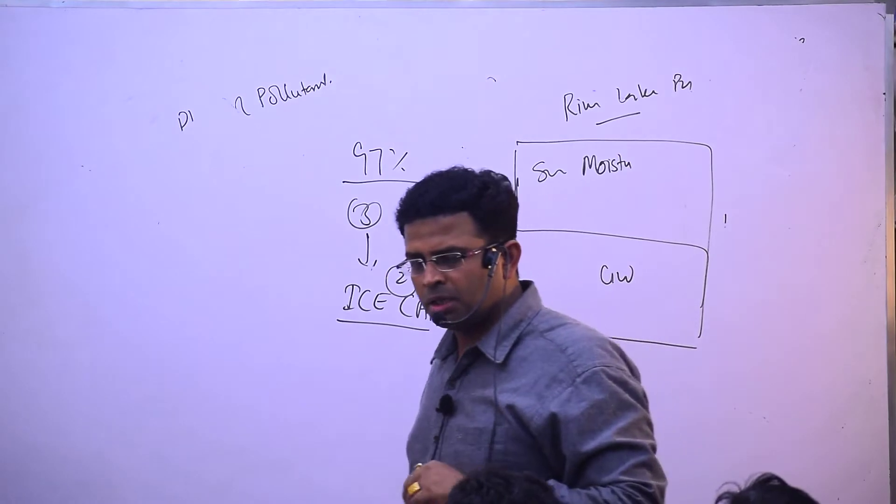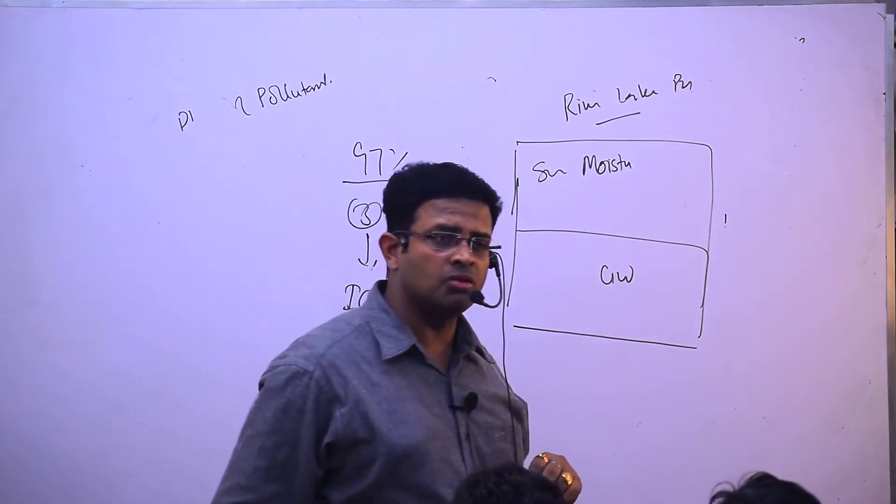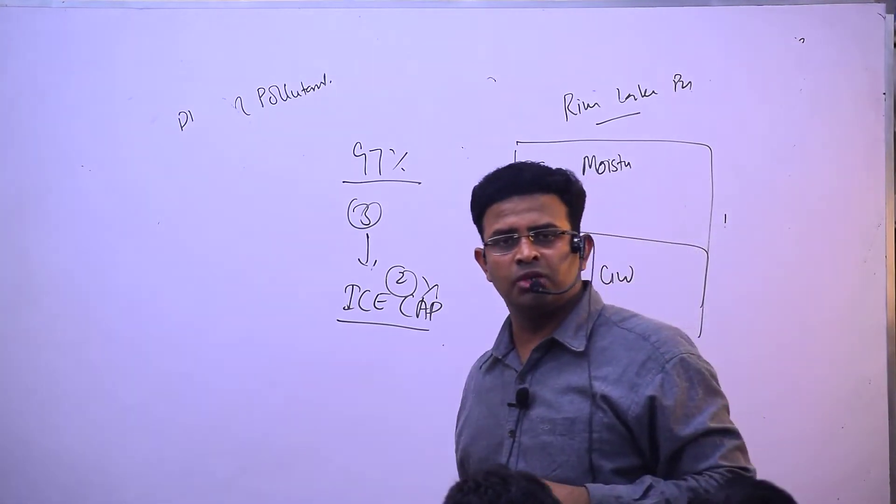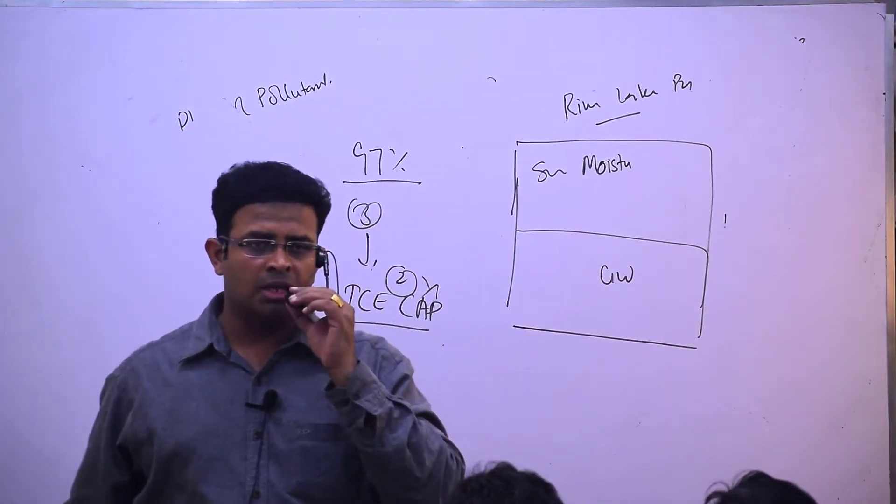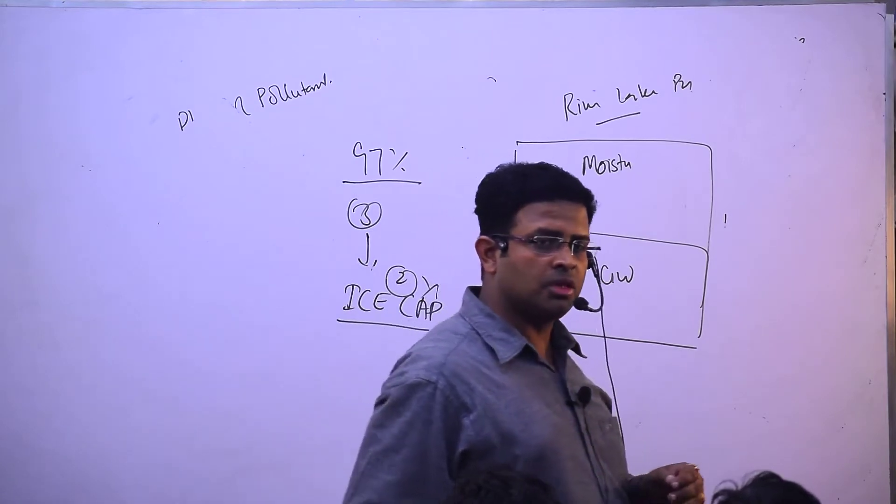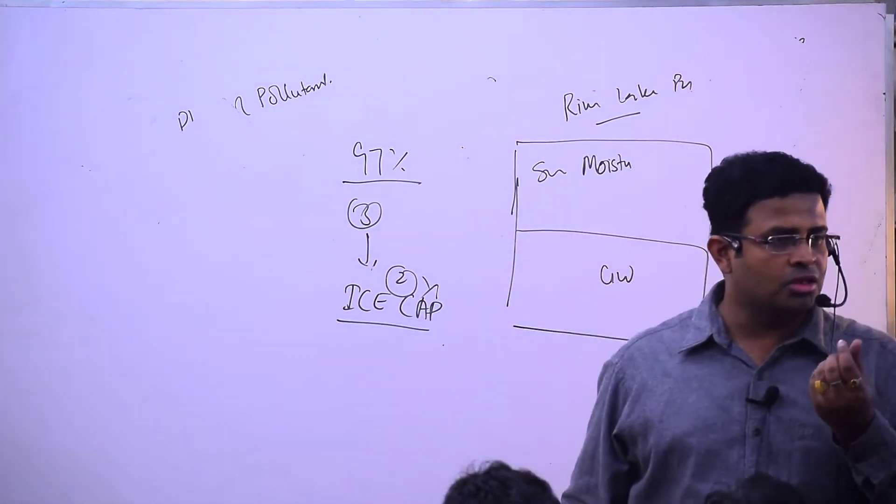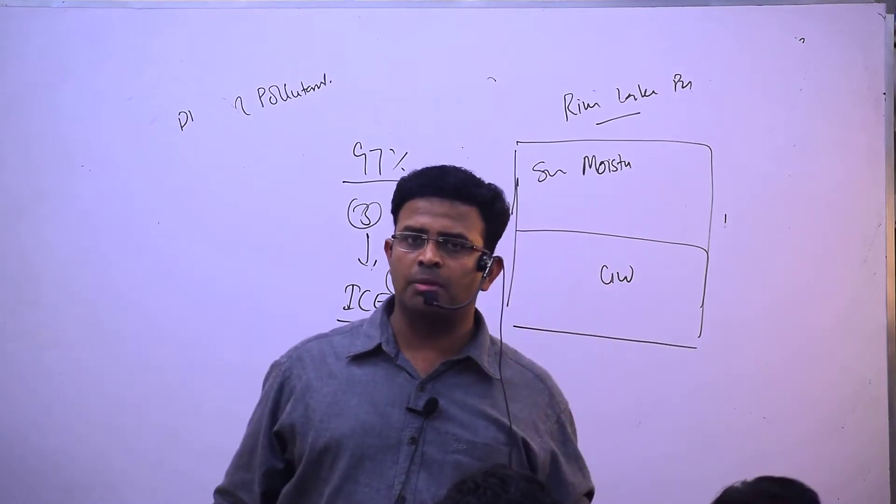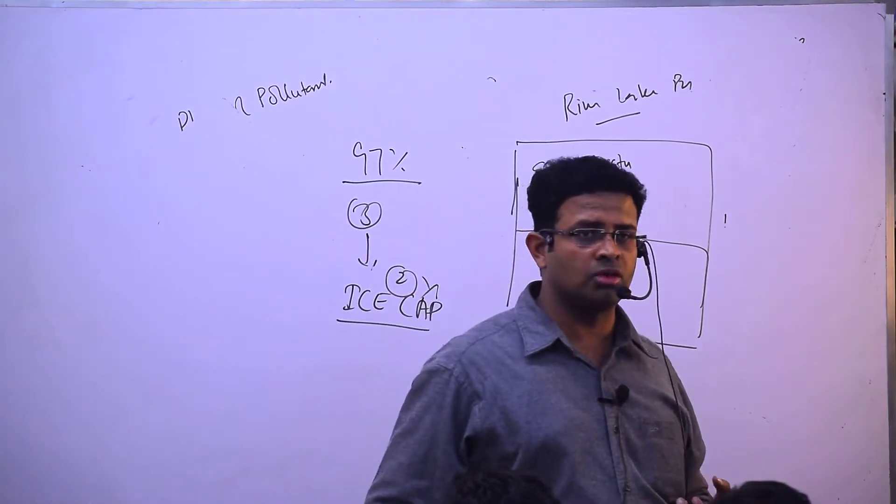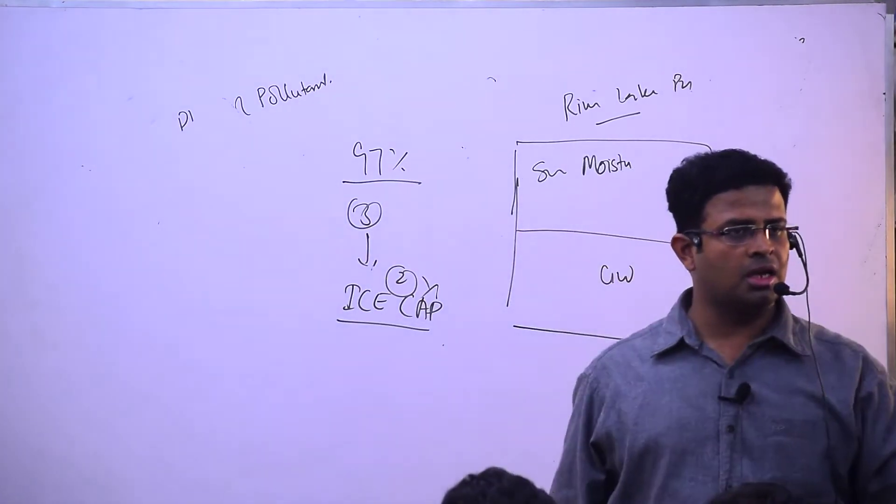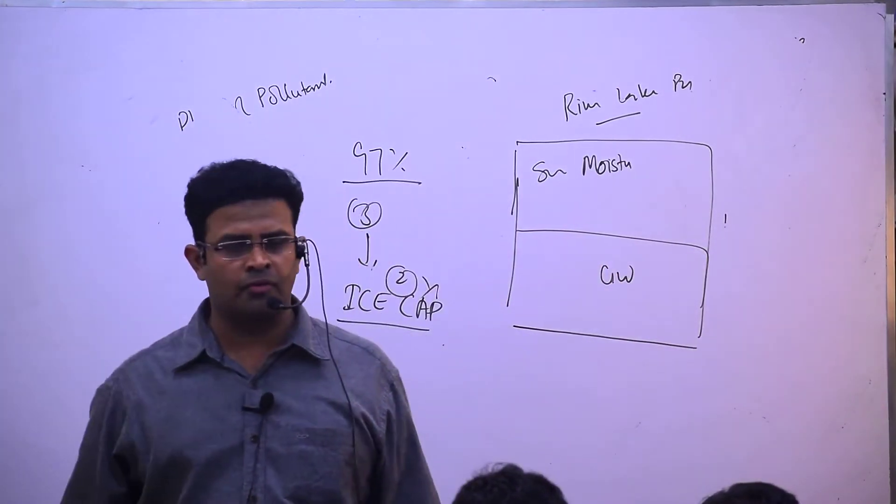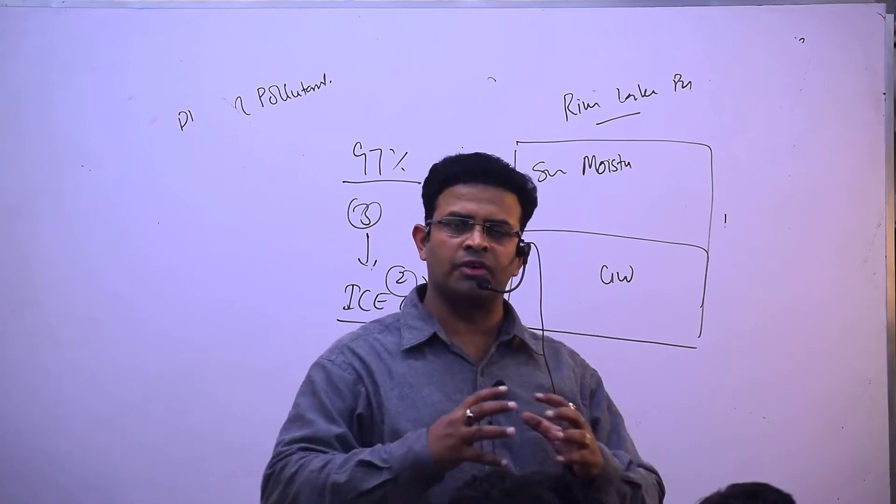Greenhouse gases include water vapor, carbon dioxide, methane, and nitrous oxide. Nitrogen goes to the fifth group forming nitrous oxide.